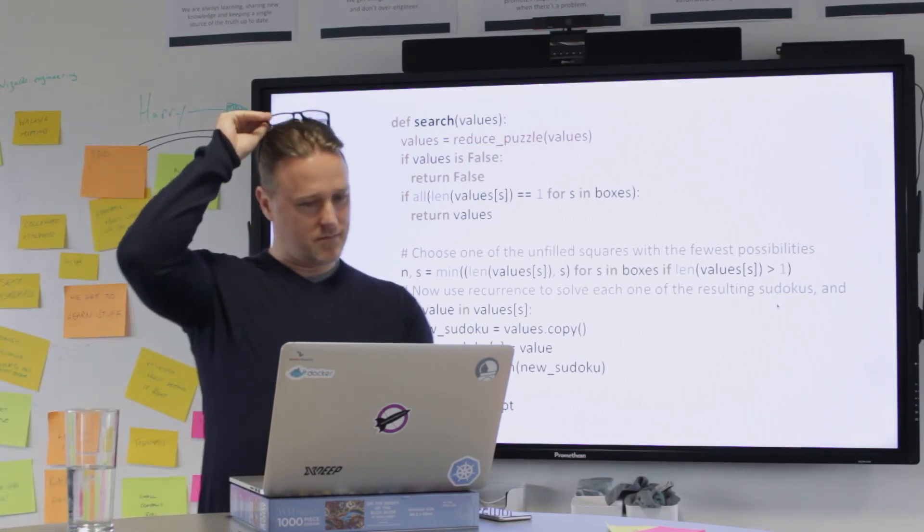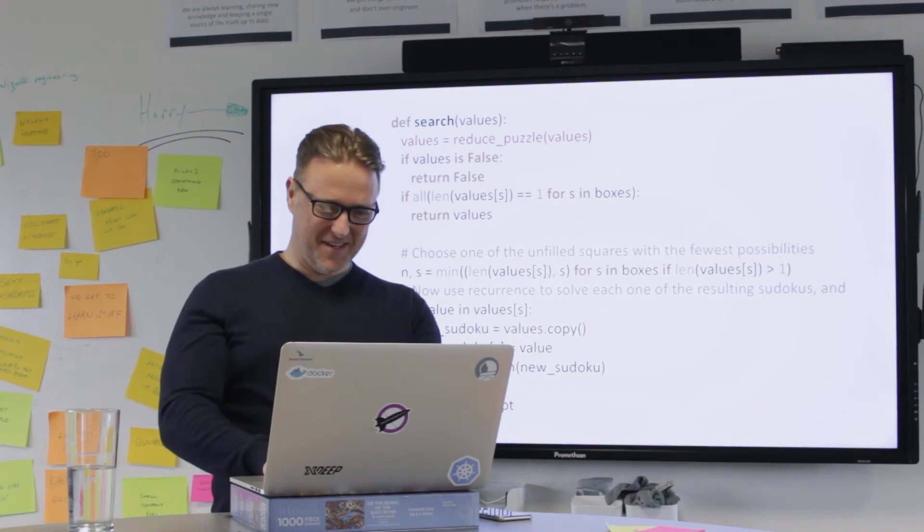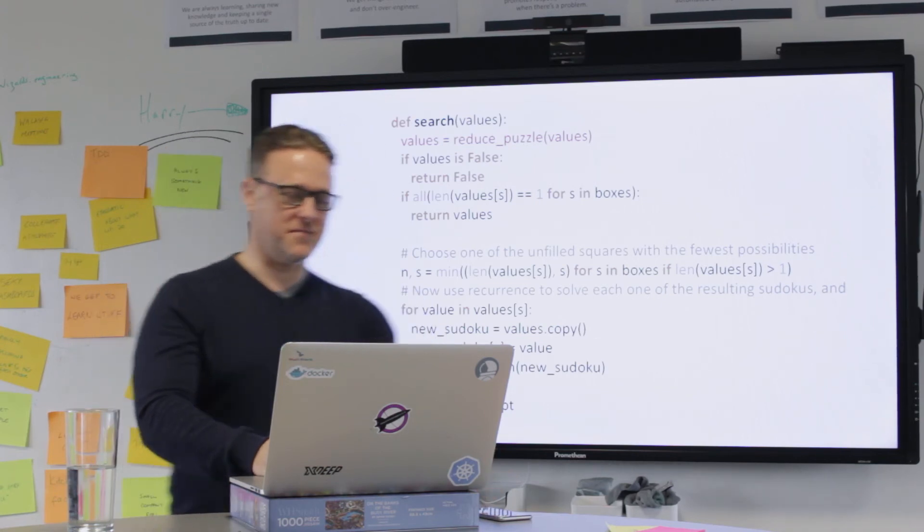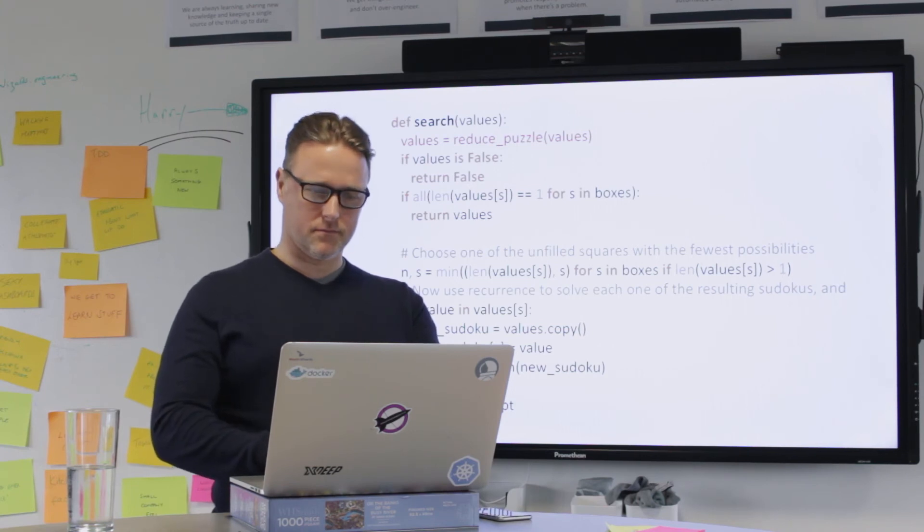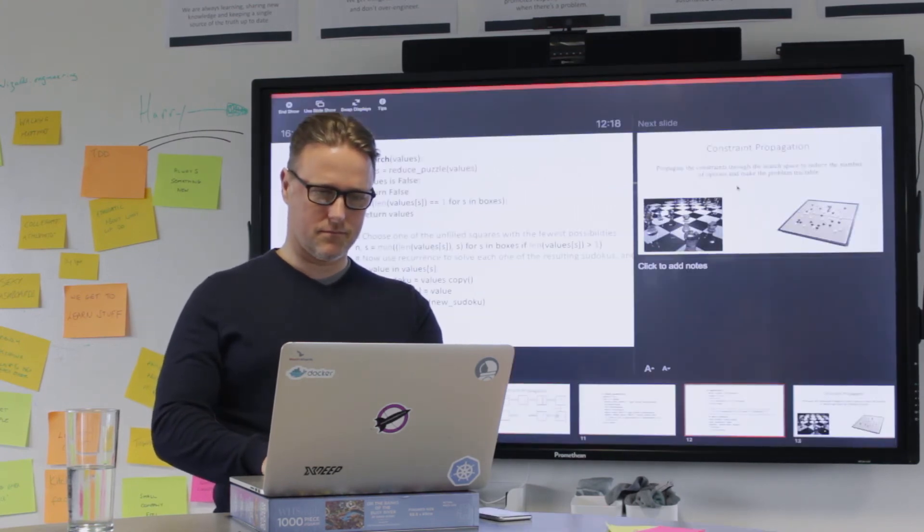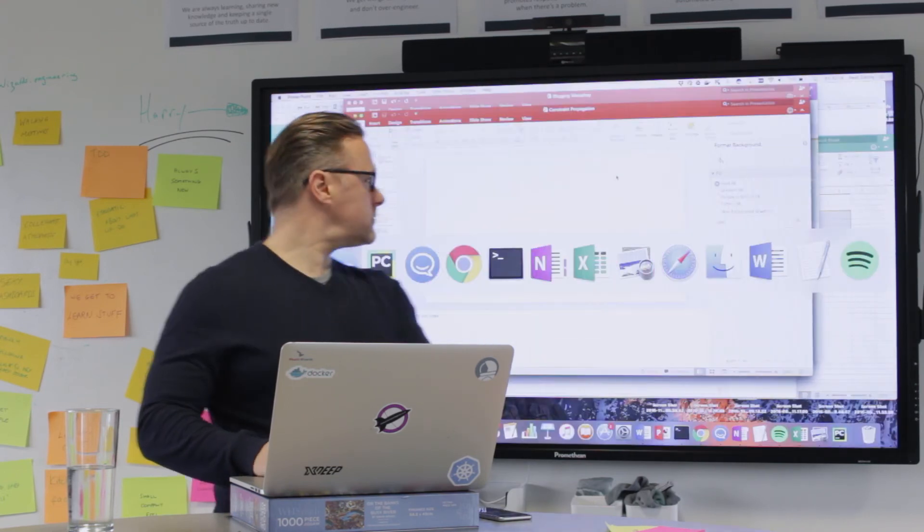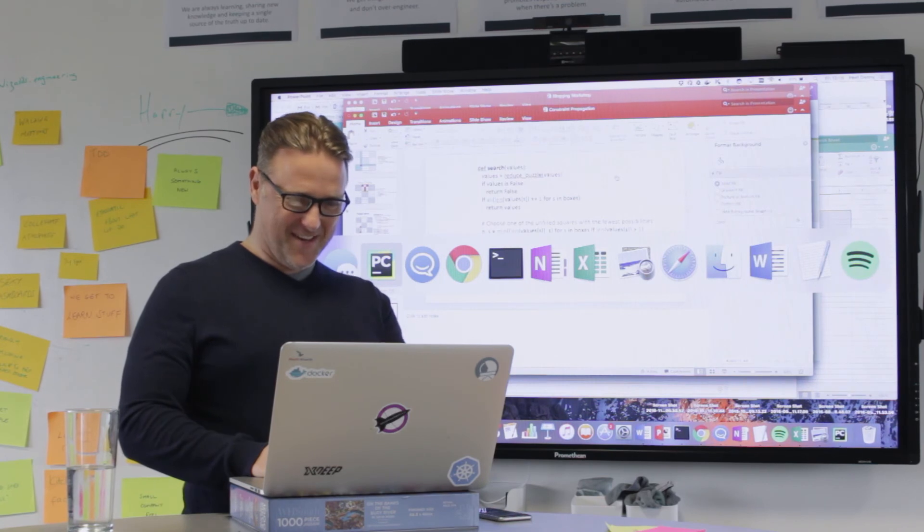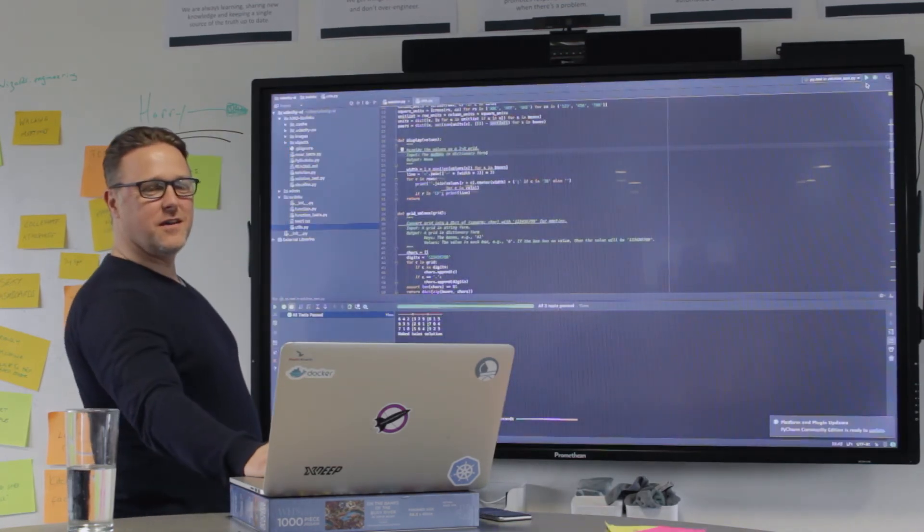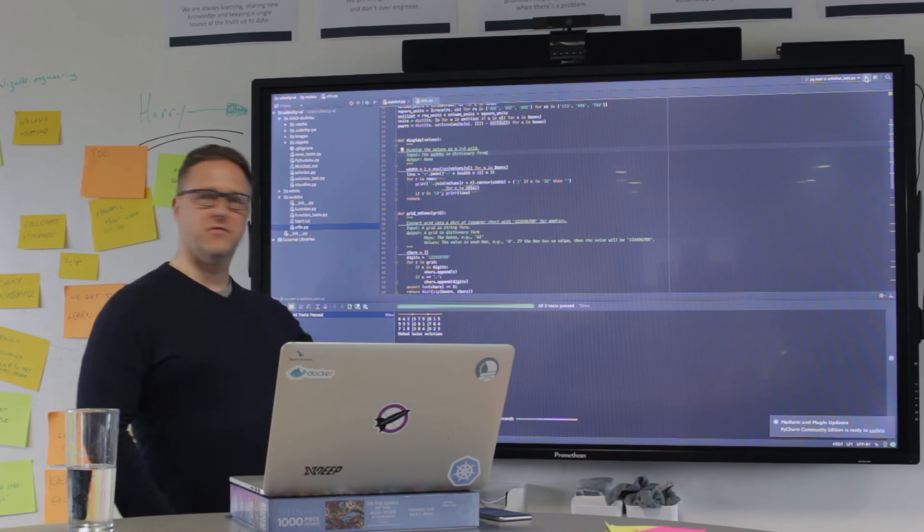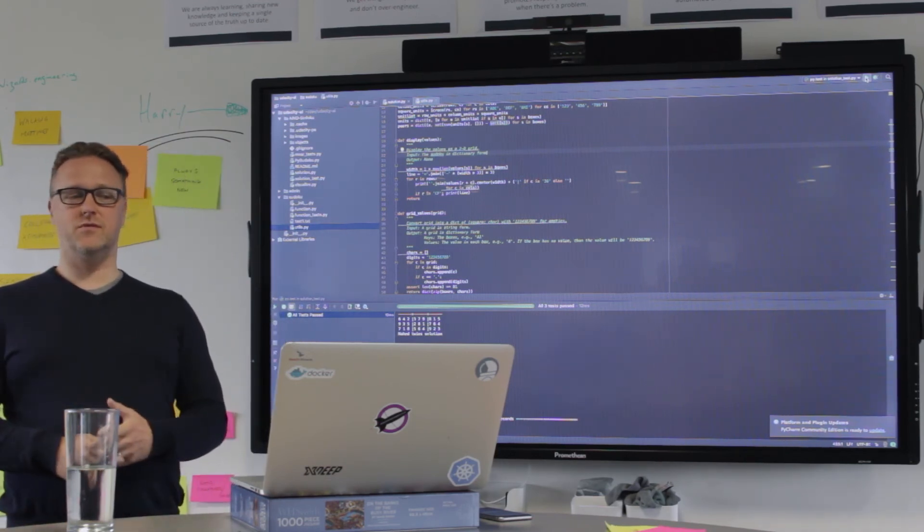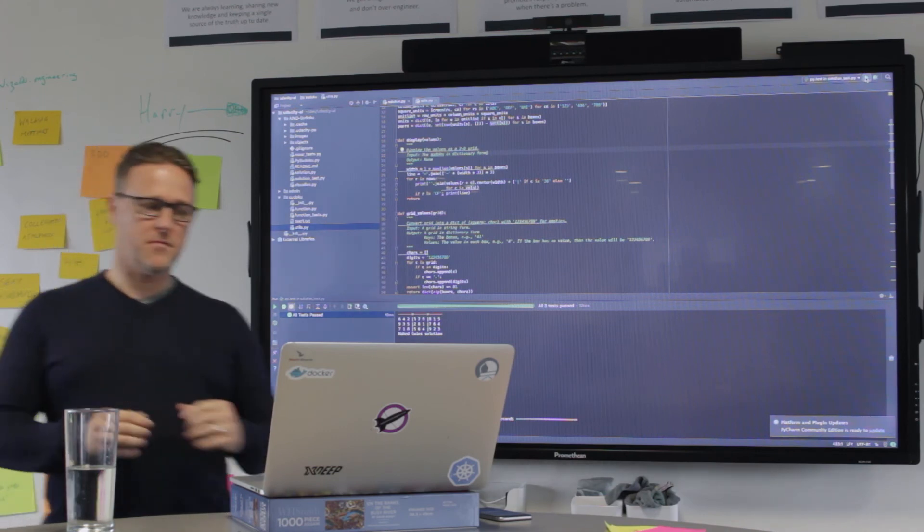And so that actually, I probably should have run this before sitting down. This is it solving. The unit test is running three different Sudoku puzzles. I can see that it runs it in 0.04 of a second, solving three Sudokus. So just that reduction made all the difference.